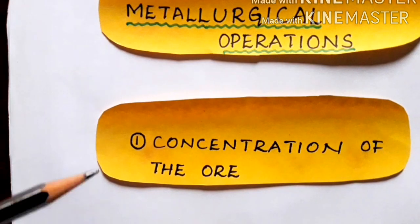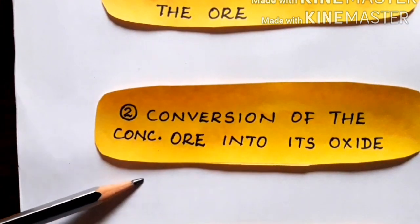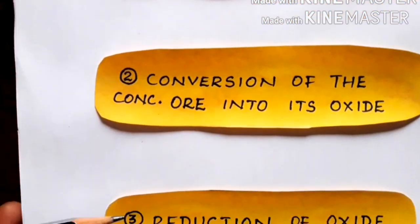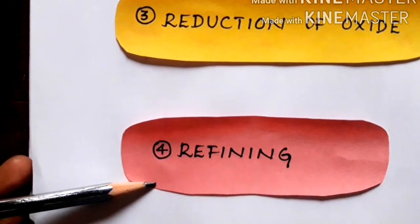The operations are concentration of the ore, conversion of the concentrated ore into its oxide, reduction of the oxide, and finally refining.